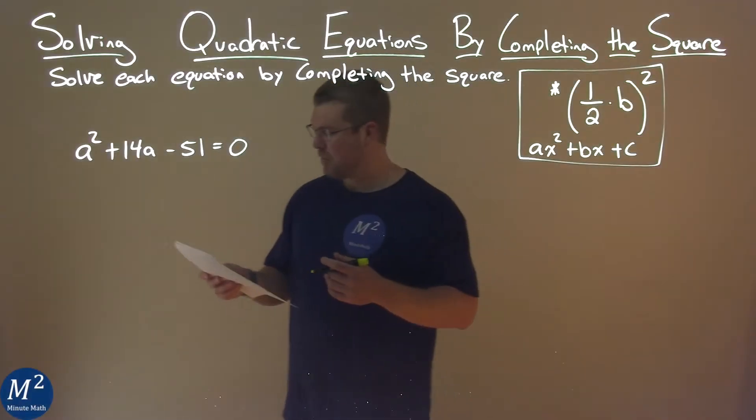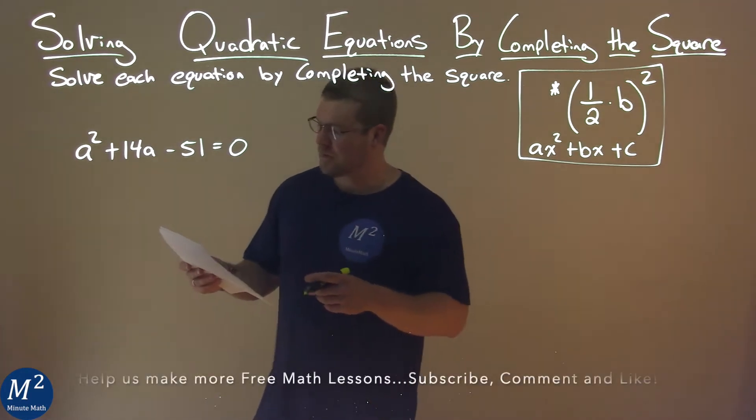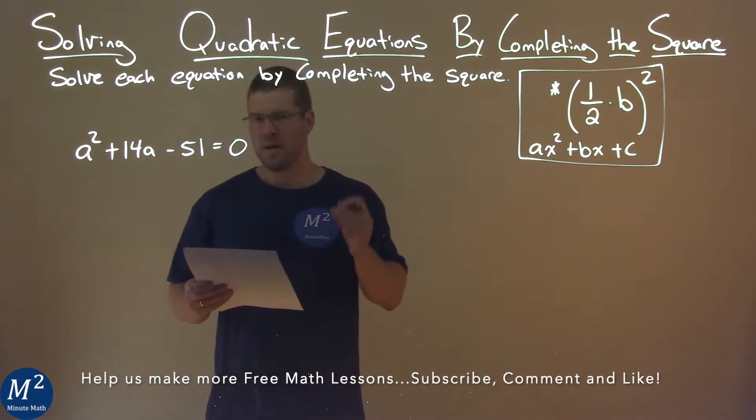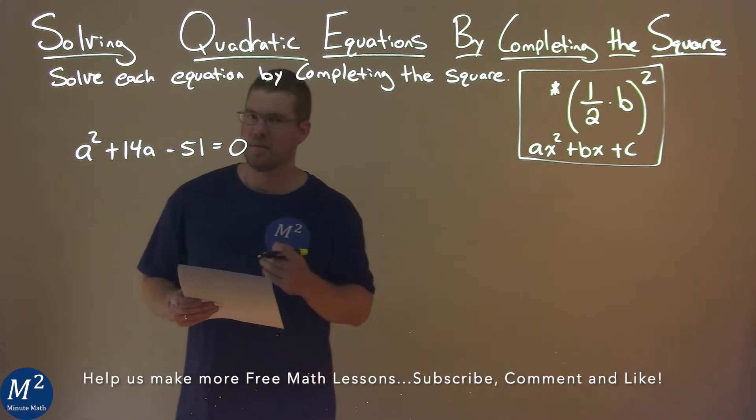We're given this problem right here, a squared plus 14a minus 51 equals 0, and we need to solve this by completing the square.